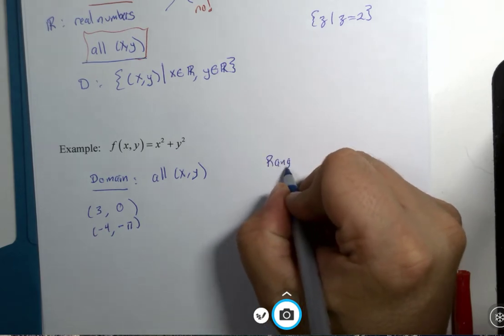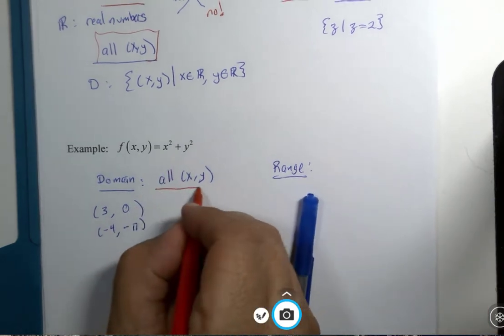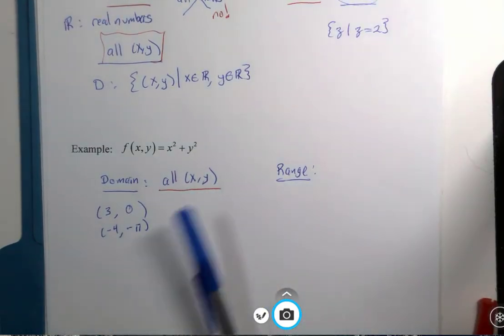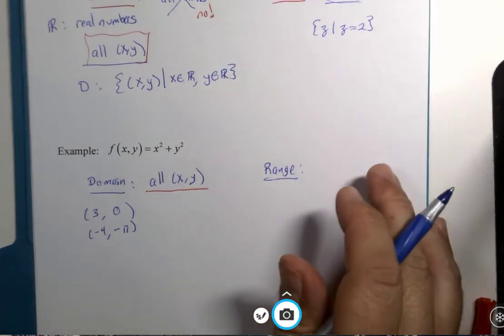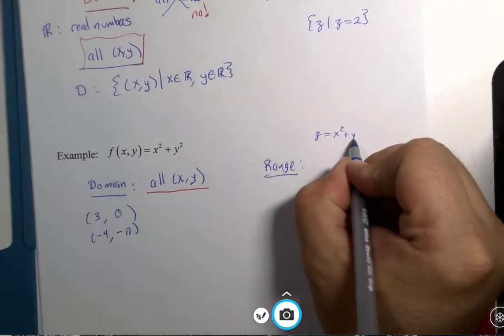If this is the domain, what kind of outputs, what does it look like if z equals x squared plus y squared?